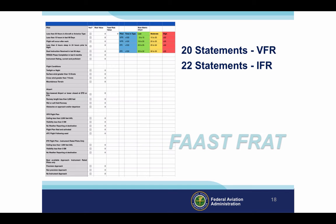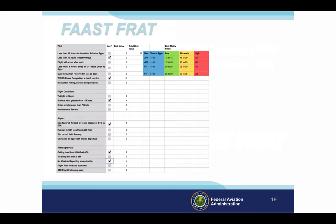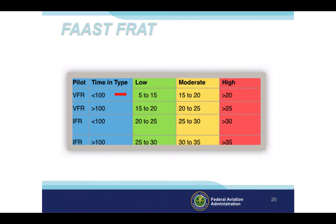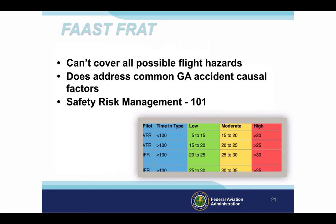The total risk value is related to a risk matrix chart to determine whether the flight risk is likely to be low, moderate, or high. In this example, the pilot has fewer than 15 hours in the last 90 days, but a Wings phase was completed in the last six months — so the risk of low experience is canceled by the Wings phase completion. Surface winds will be greater than 15 knots, resulting in a risk value of plus 4. The flight will be at a non-towered airport, ceiling will be less than 3,000, and there's no weather reporting at the destination — resulting in a total risk value of 15. Looking at the risk matrix chart, a total risk value of 15 falls between low and moderate for a VFR pilot with fewer than 100 hours time in type, but well within the low range for an IFR pilot with more than 100 hours time in type. No flight risk assessment tool can cover all possible flight hazards, but this one, though simple, does address some factors that are common to GA accidents.